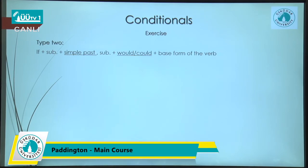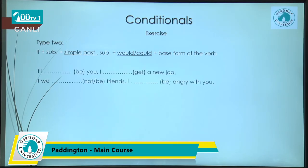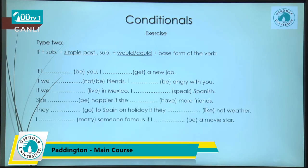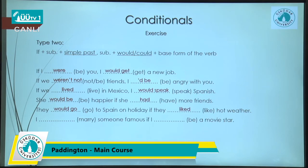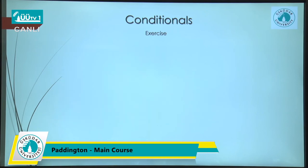Let's go to type 2 exercises. The structure is: if plus subject plus simple past, then subject plus 'would' or 'could' plus base form. Answers: 'If I were you, I would get a new job.' Remember: 'were' for all subjects in type 2 with 'to be'. 'If we were not friends, I'd be angry with you.' 'If we lived in Mexico, I would speak Spanish.' 'She would be happier if she had more friends.' 'They would go to Spain on holiday if they liked hot weather.' 'I would marry someone famous if I were a movie star.'